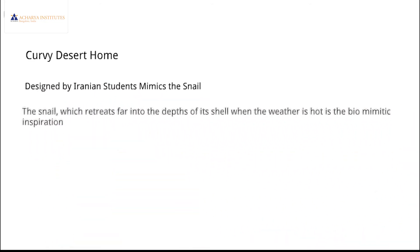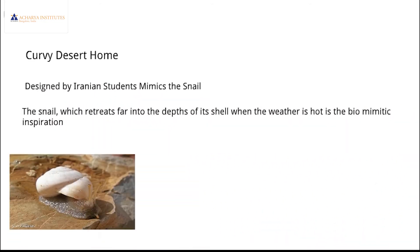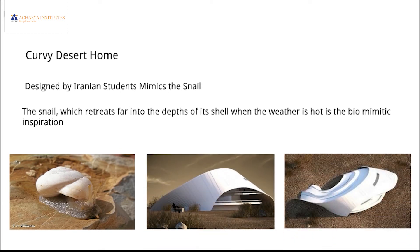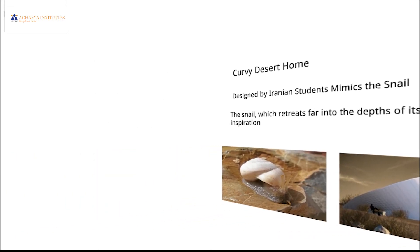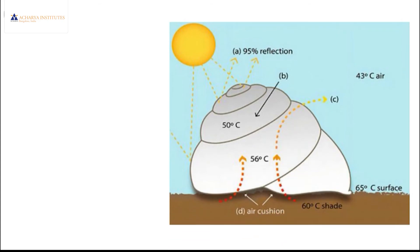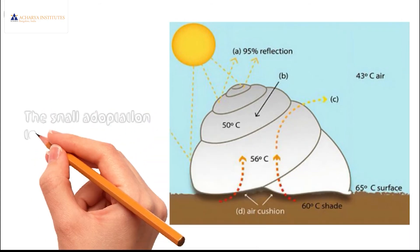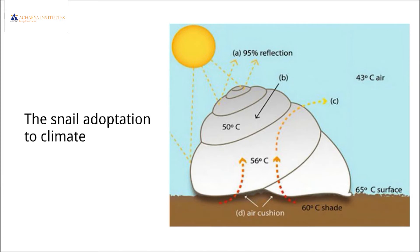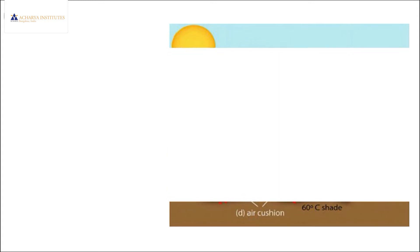Our next example would be the Curvy Desert Home, designed by Iranian students, which mimics the snail. Here you could see how a snail adapts to the surrounding temperature. In the structure of this shell, you could see the air cushions which are formed at the bottom. You could also see the 95-degree reflection angle and 65-degree shade angle which are considered in the design of the building.